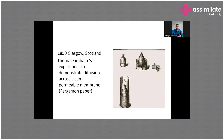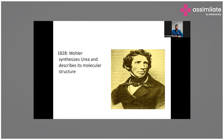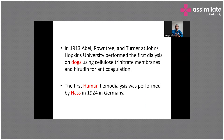The next notable figure is Wohler, who synthesized urea and first described its structure and properties. After him, Abel, Rowntree, and colleagues at Johns Hopkins University first performed dialysis on animals using a cellulose trinitrate membrane, and they also introduced anticoagulation — essential because blood must not clot during dialysis.